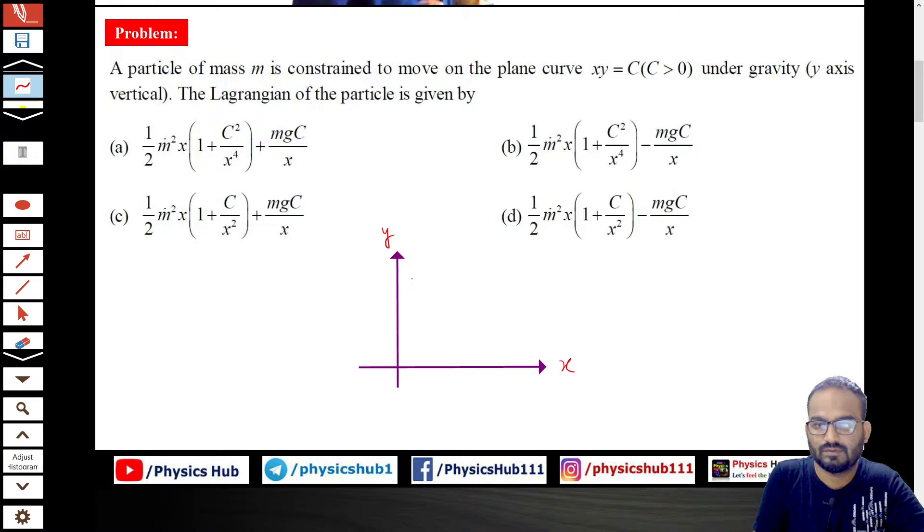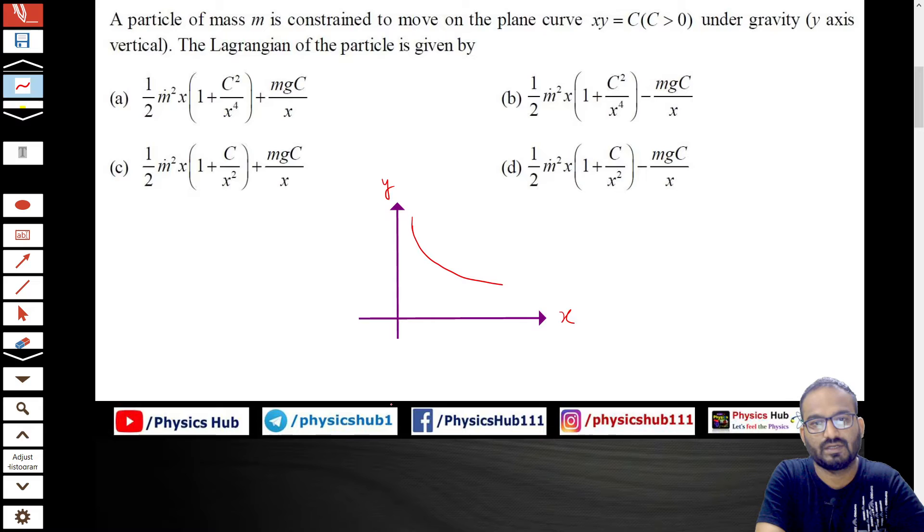I'm not drawing it correctly, but this is like, I have all the time. Okay, we will get this kind of curve. What is given to us, a particle of mass m, it is moving on this plane curve xy = c. We have to find out the Lagrangian.